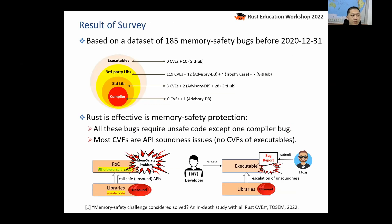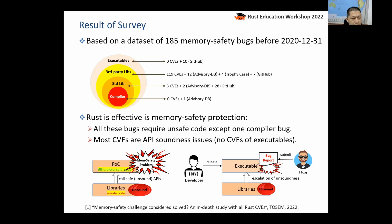I want to highlight the results of my survey, which is based on a dataset of over 100 memory safety bugs. Some bugs are from third-party libraries and some from the standard libraries or the compiler. The main result is that Rust is really effective in memory safety protection. As evidence, all these bugs require unsafe code except for compiler bugs. Secondly, most CVEs — the most critical bugs — are API soundness issues found in executable programs, meaning the APIs are unsound.